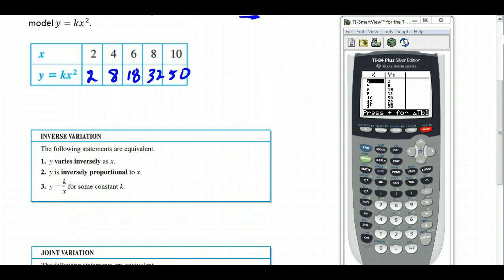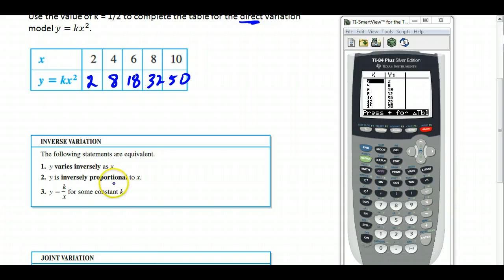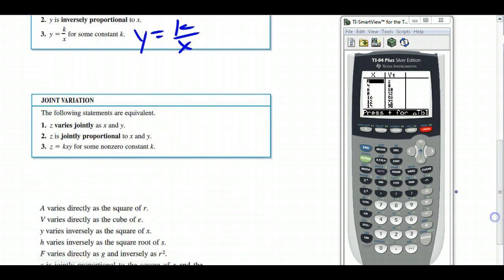Okay, now inverse variation. Inverse variation means that instead of K times X, you've got Y equals K divided by X. So varying inversely and inversely proportional all mean the same thing. And when you have them all together, you can say Z varies jointly as X and Y, jointly proportional to X and Y, and that's the same thing as saying Z equals K times X and Y. So if you have three things that are related to each other, it's going to be called joint variation.